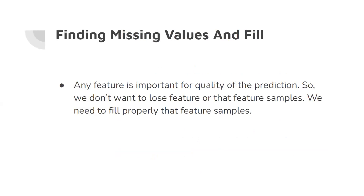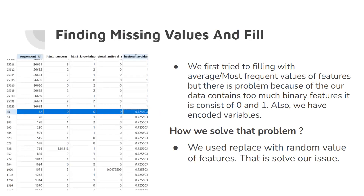Finding missing values and filling them. Any feature is important for quality of the prediction, so we don't want to lose features or drop samples. We need to fill missing feature samples properly. We first tried filling with average or most frequent values of features, but there is a problem because our data has too many binary features consisting of 0 and 1, and we also have encoded variables. We solved that problem by replacing with random values of features.